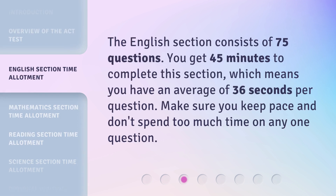The English section consists of 75 questions. You get 45 minutes to complete this section, which means you have an average of 36 seconds per question. Make sure you keep pace and don't spend too much time on any one question.